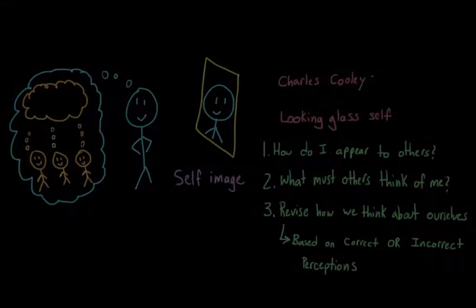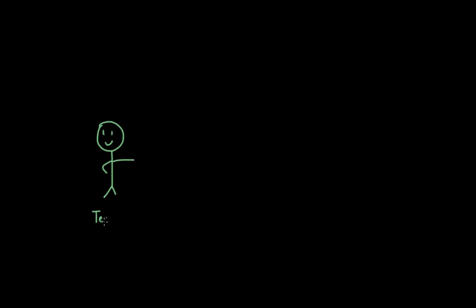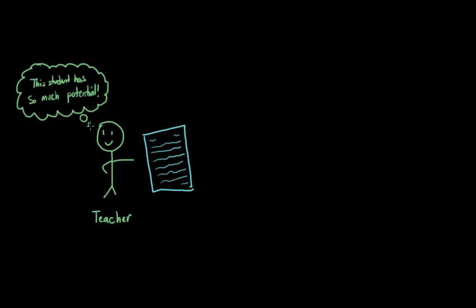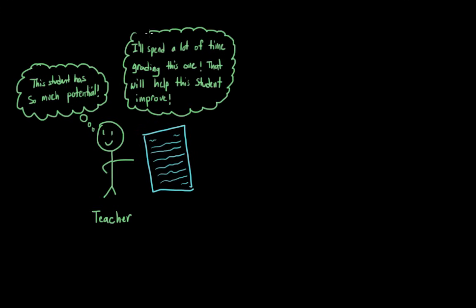Let's say we have a teacher grading a paper very harshly, grading it very critically, because they think that the student who wrote this paper has a lot of potential, and they're grading that student's paper harshly to help them reach it. The student gets their paper back and notices it's full of red ink marks and corrections from the teacher. How might that student interpret this, and how might that influence their self-image?